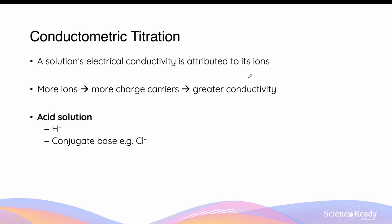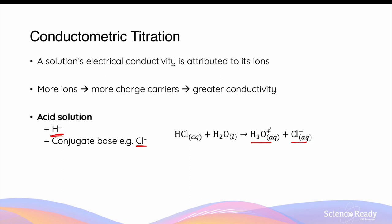This is particularly relevant in the context of acid and base solutions, because acid solutions will produce hydrogen ions in water and conjugate bases, which can sometimes be ionic as well. For example, hydrochloric acid dissolves in water to produce hydrogen ions as well as chloride ions. Both ions contribute to the conductivity of the acid solution.